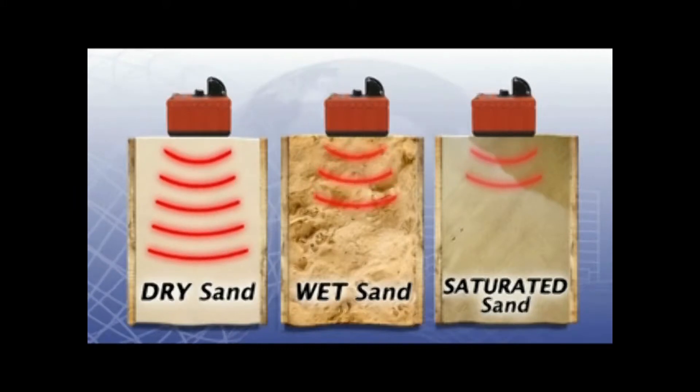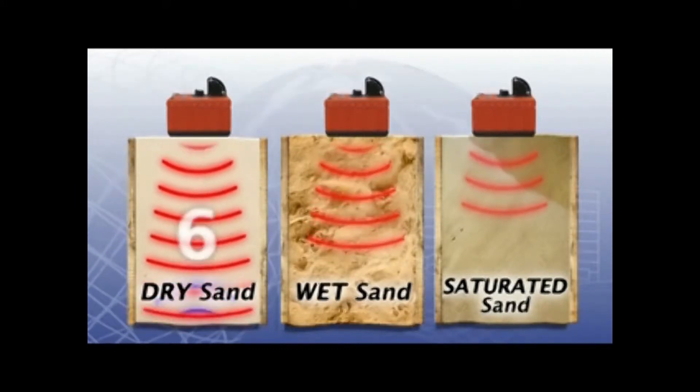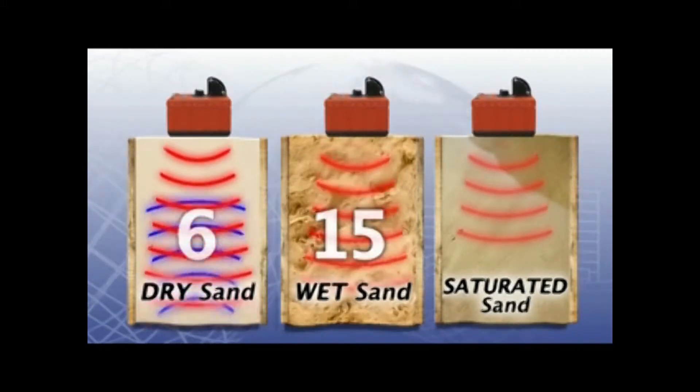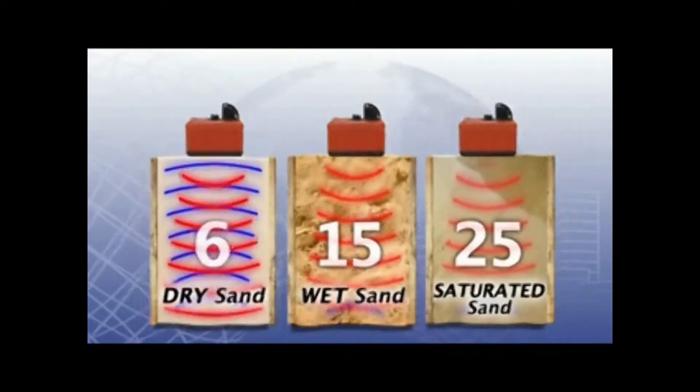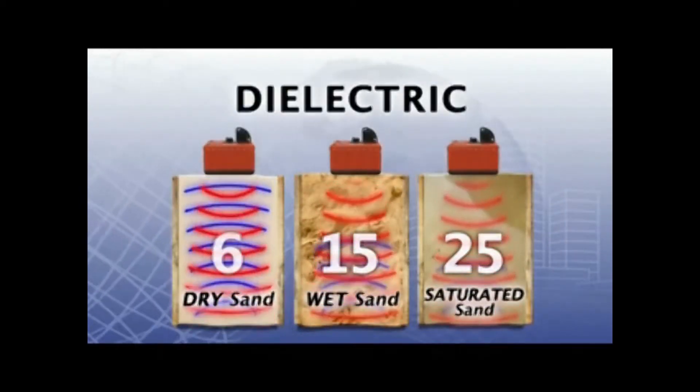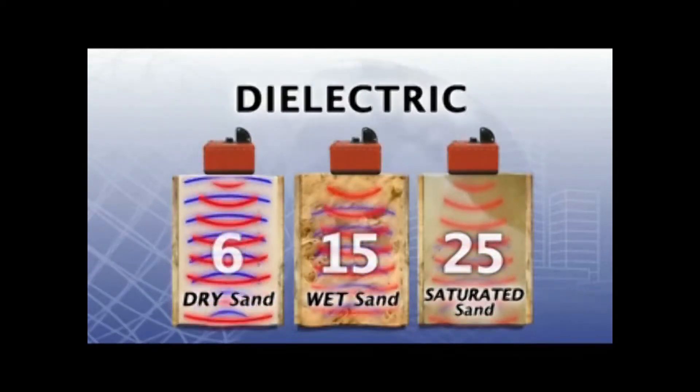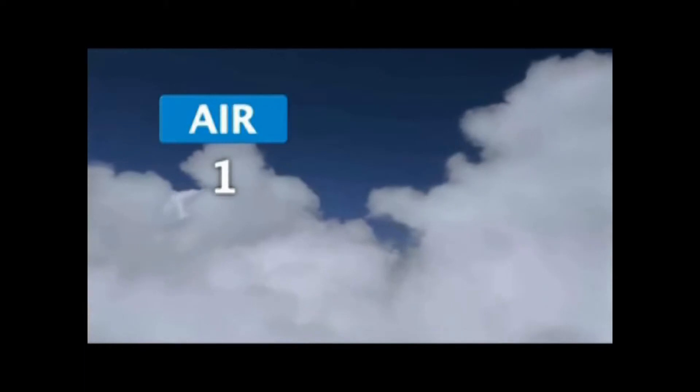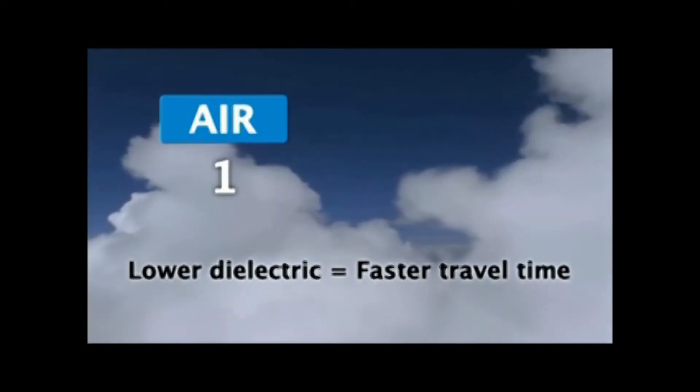Radar travels at different speeds through different mediums. A value is assigned to these mediums to represent different velocities of radar. These values are called dielectric. Dielectric is important so that the depth of targets or layers can be accurately estimated. Air has a dielectric of 1, which means radar travels fastest through air.